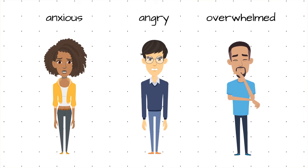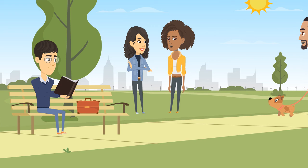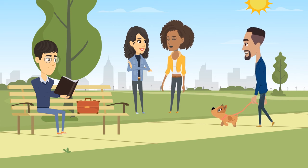So next time you feel anxious, angry, overwhelmed, or you just want to withdraw from everything — sleep, disconnect and spend some time alone — remember that your nervous system is doing its best to get you through the circumstances you are in. Also remember that giving your nervous system what it needs will help you go back to feeling safe and engage with what's important to you.